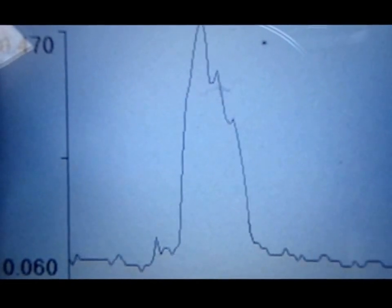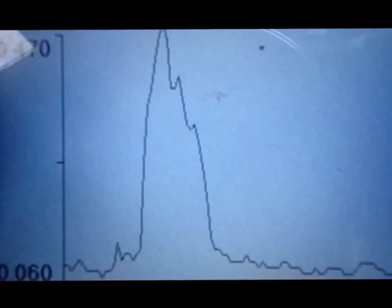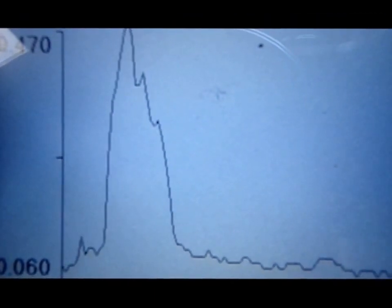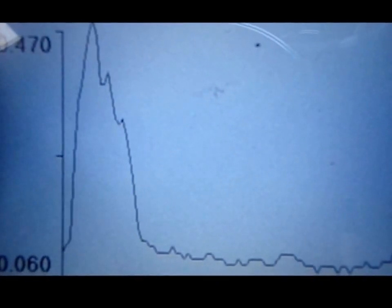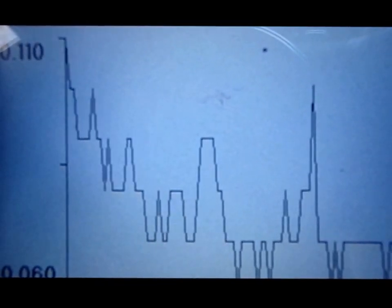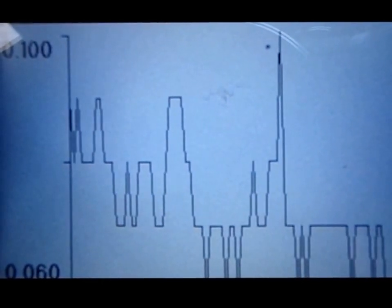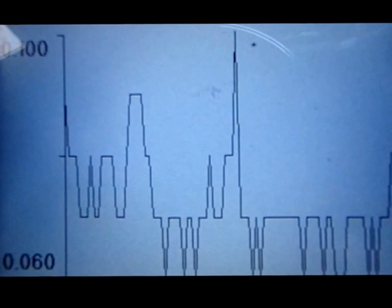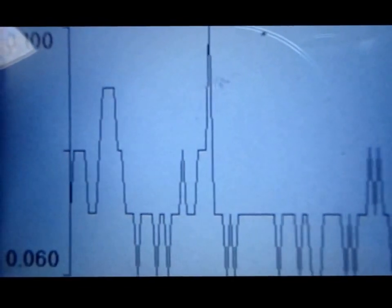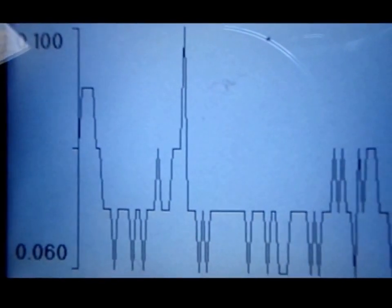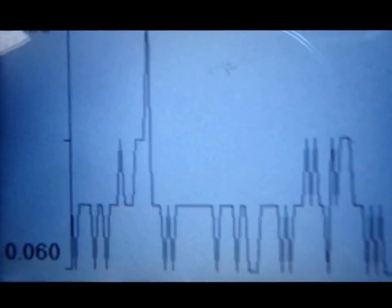You can also do playback data. So if you're only getting a misfire at say 60 miles an hour on the highway and you can't really be sitting there looking at the scanner and the numbers changing and fluctuating and all, you can start recording right before you get up to 60.